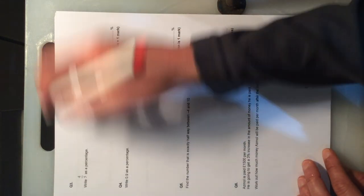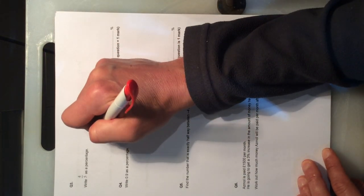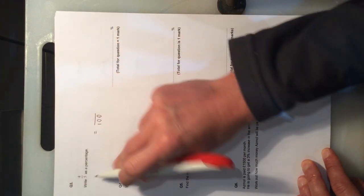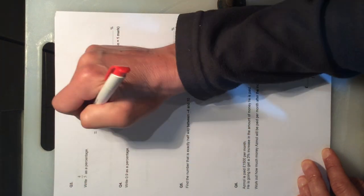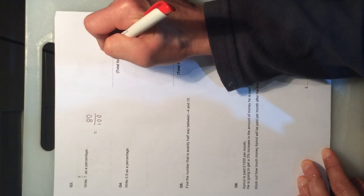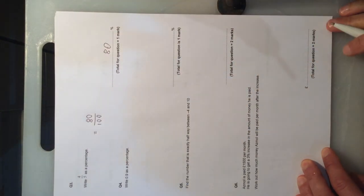Question 3, write as a percentage. Percentages are out of 100, we've timesed by 20, timesed by 20, and that's why it's 80%. That's going to be my answer here.